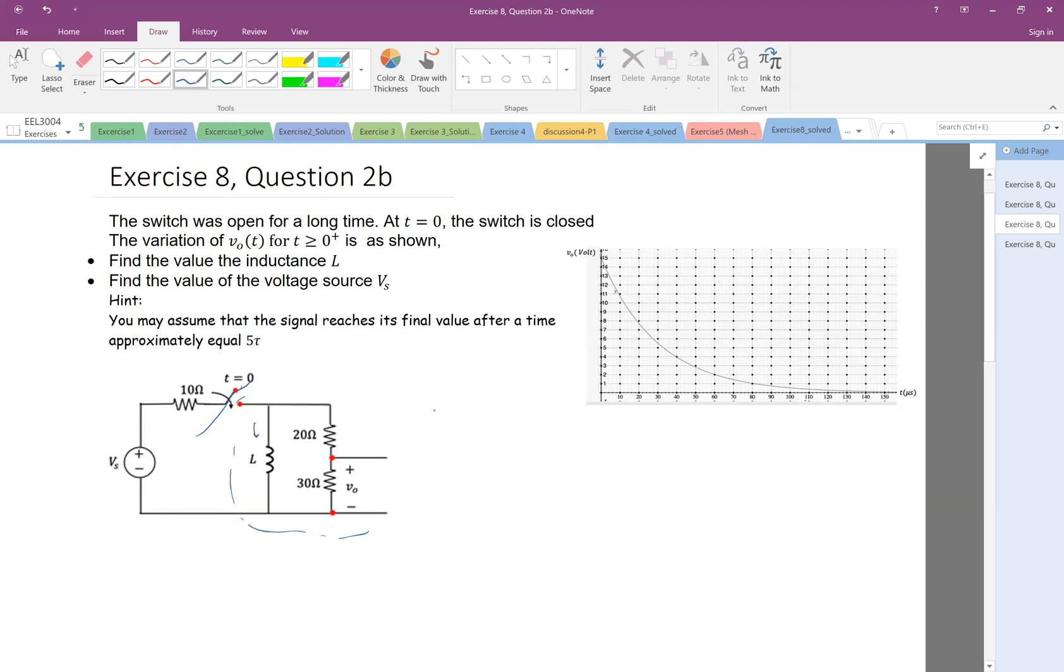Therefore, I can easily say that IL at zero minus is zero. The same as, for example, if you look at this voltage, at zero minus is zero. So everything is zero here. And then at t equal to zero, we close the switch.